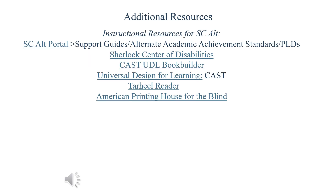Additional resources to support instruction and the summative assessment include the SCAlt portal, which includes support guides, alternate academic achievement standards, and performance level descriptors. Other links to support instruction include the Sherlock Center on Disabilities, CAST UDL Book Builder, CAST Universal Design for Learning, Tar Heel Reader — a wonderful resource for adaptive books from preschool to high school — and the American Printing House for the Blind, a valuable site for students who meet the criteria under IDEA for visual impairment, including blindness.